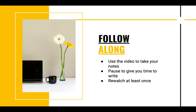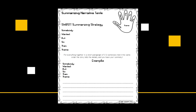Since you are pausing to write and all of that, I do suggest that you re-watch the video at least once just to make sure that there's nothing you missed and that you got everything down correctly. So we are talking about summarizing narrative texts. I'm going to give you a specific strategy called the somebody wanted but so then theme strategy to use, and that's what you're going to write down. Then we're going to practice with a familiar story to give you an example of what the strategy looks like in action.